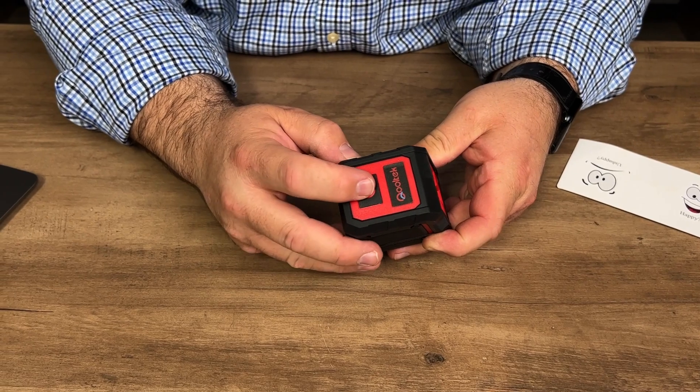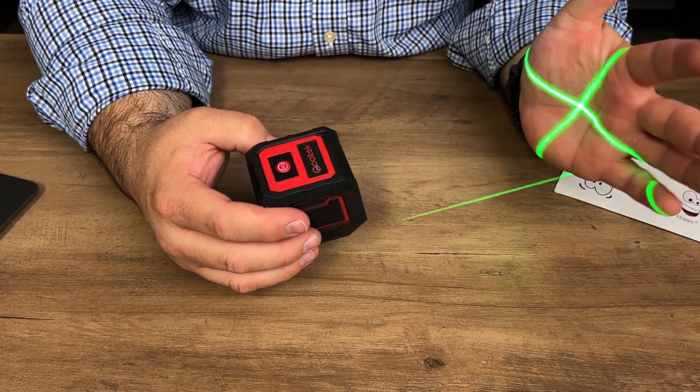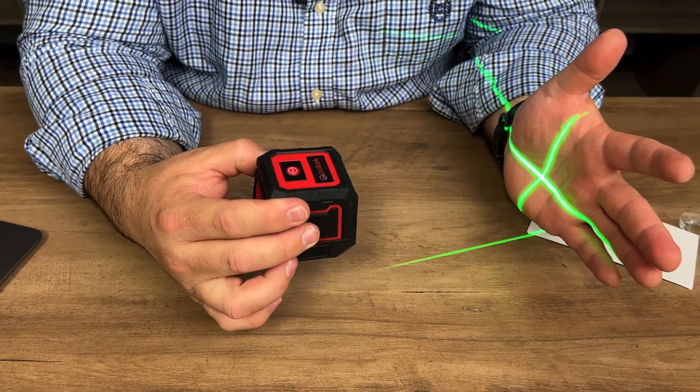The power button is here on the top of it. So we press the power button once and you can see the laser level comes on automatically. Now you can use this in different modes.